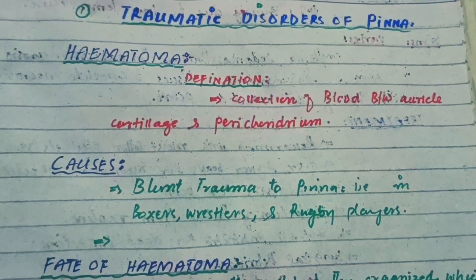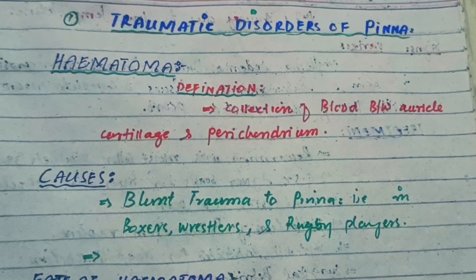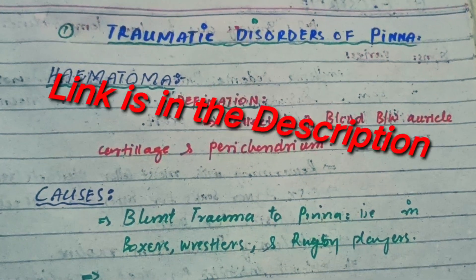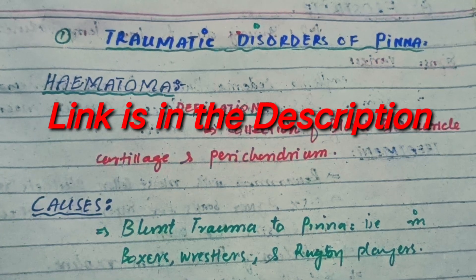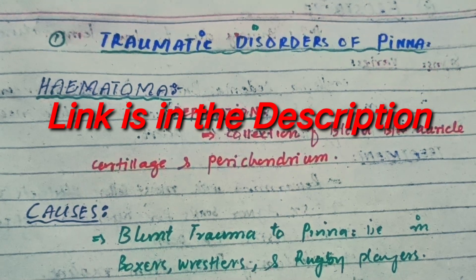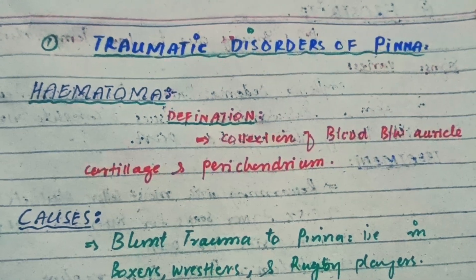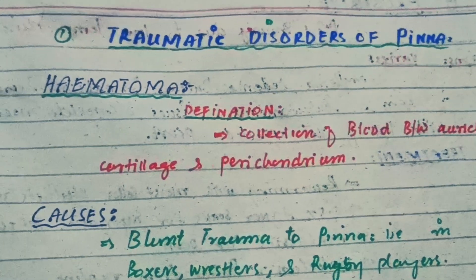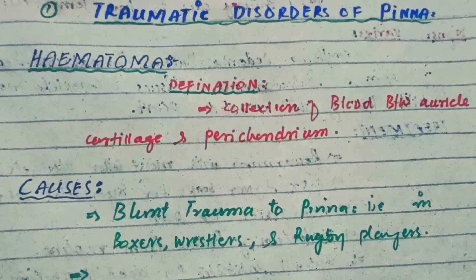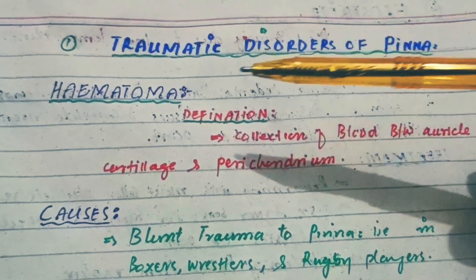Assalamu alaikum everyone, welcome to my channel Medical Lectures and Mnemonics. Today I'm going to talk about the traumatic disorders of the auricle. In previous videos I already covered the anatomy and congenital disorders of the auricle. The disorders of the auricle can be categorized as: first, congenital; second, traumatic; third, inflammation; and fourth, neoplastic conditions.